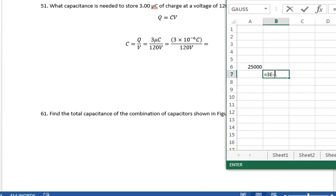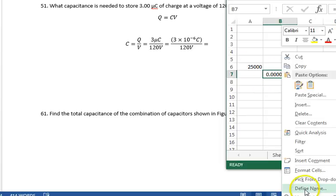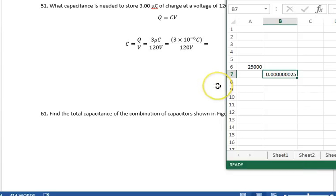3e minus 6 divided by 120. Put that in scientific notation just to make my life a little easier.